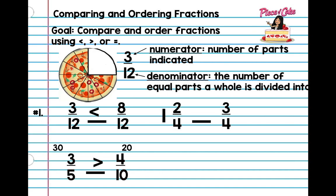Let's look at this one. You're going to use your logic, which is common sense. You know that this has a whole number, so this one is clearly greater. So what do you do if you have two numbers that are a mixed fraction and an improper fraction?